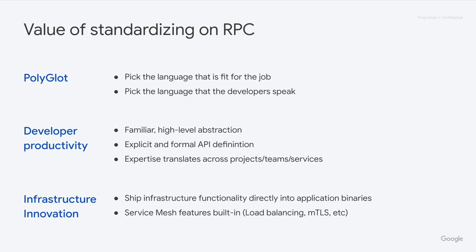Having a standard RPC layer in an organization also helps with developer productivity. Developers become familiar and get used to a nice higher level of abstraction, and they are able to take those skills across projects and teams within the organization. And for platform teams, as the organization size grows, there ends up being some need to ship infrastructure improvements — maybe a new observability solution. By having a standard solution like gRPC, it's easy for a platform team to roll that out without having to go work on every single application and service.